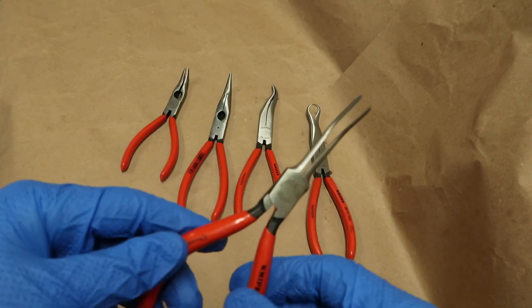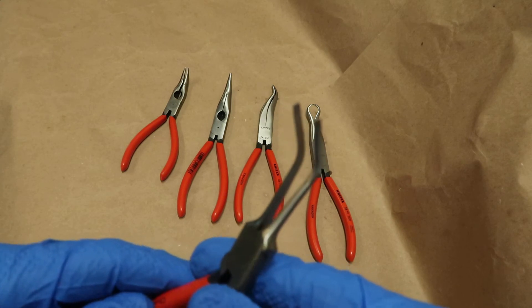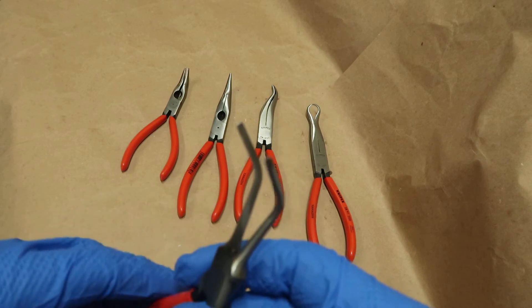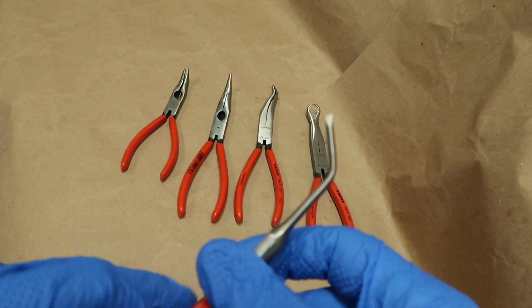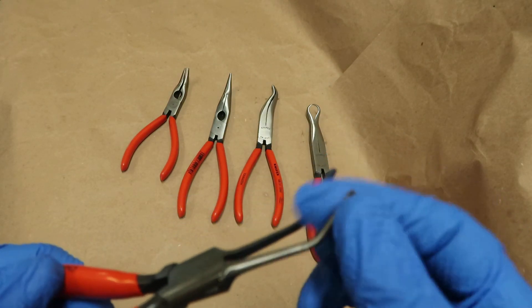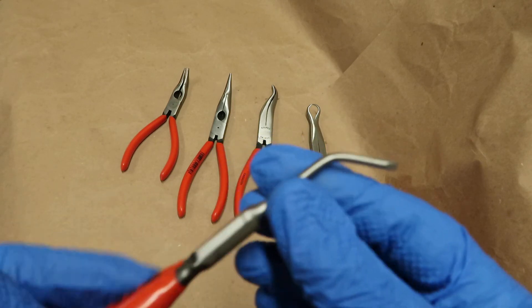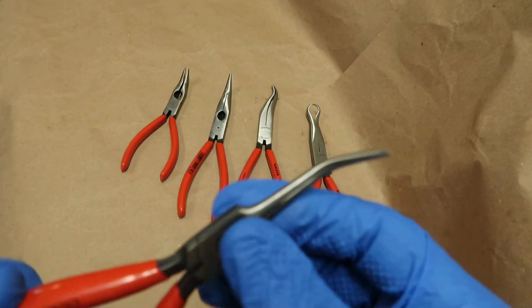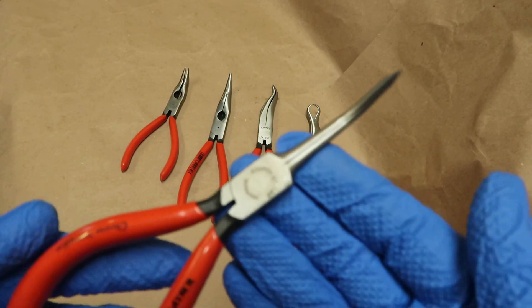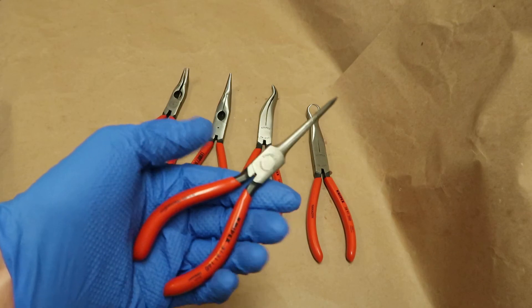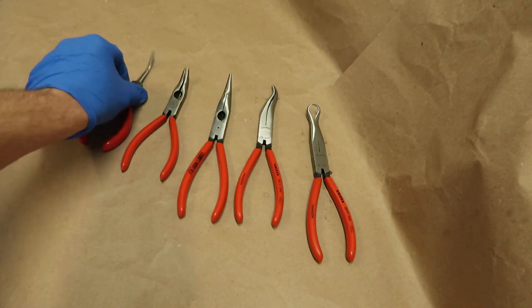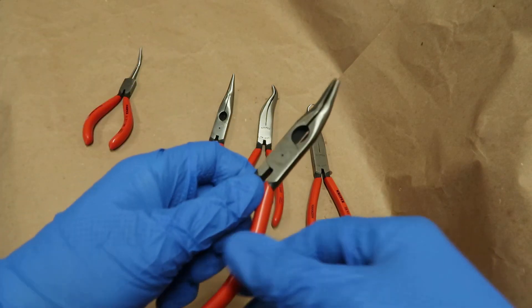This first one, it's a little tough to see, there are no serrations on the inside of that. I believe these are gunsmithing pliers. By not having serrations you won't mar whatever you're picking up. Nice and small. I like the bent tip to get in and out of something if you're trying to reach around. Fairly small in the hand, great for small stuff.